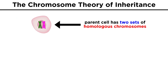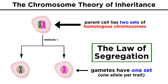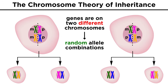In meiosis, homologous pairs of chromosomes are separated, which accounts for the law of segregation. In addition, only one allele for a particular gene will show up in a gamete, not both. And the fact that homologous pairs are arranged randomly during this process accounts for the law of independent assortment, because if two genes are located on two different chromosomes, the combination of alleles for those two genes that ends up in a particular gamete will be totally random as well.